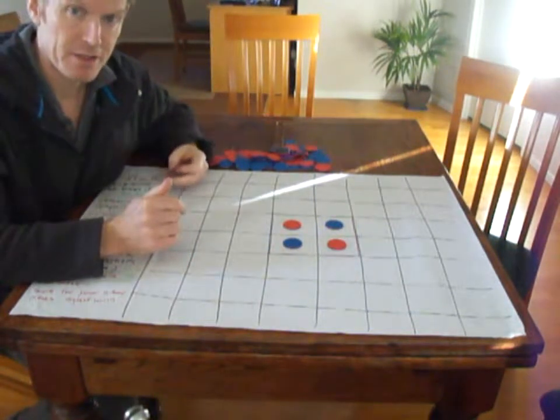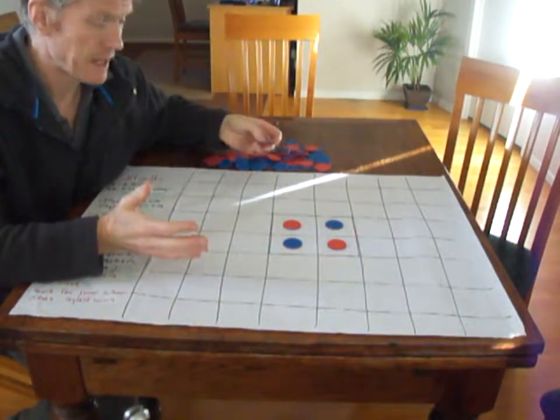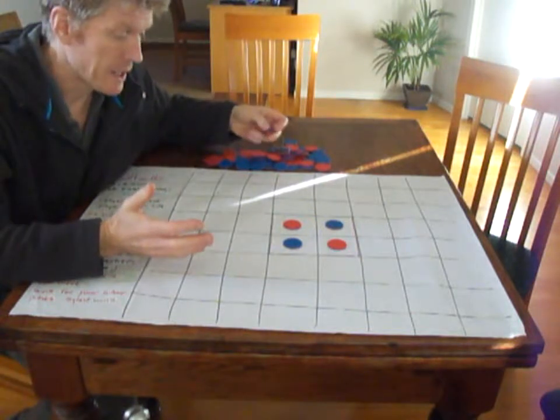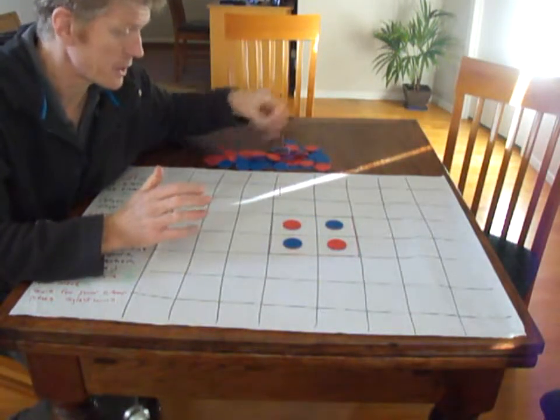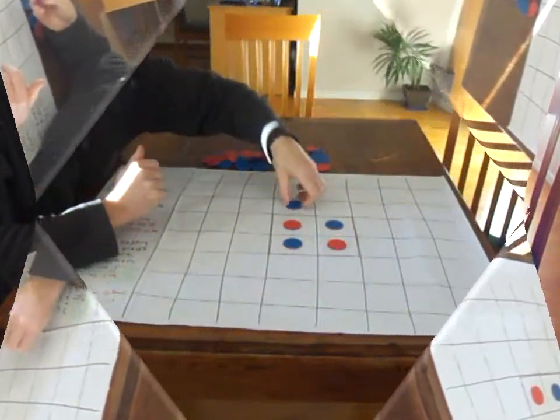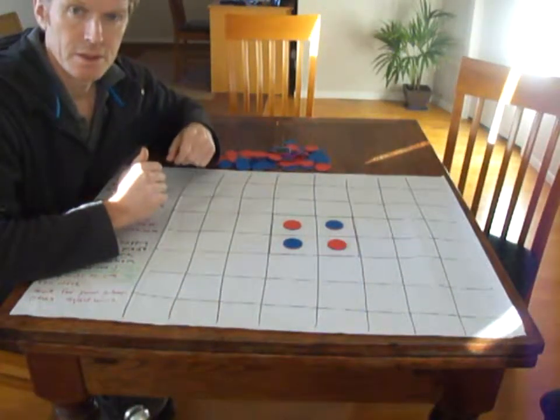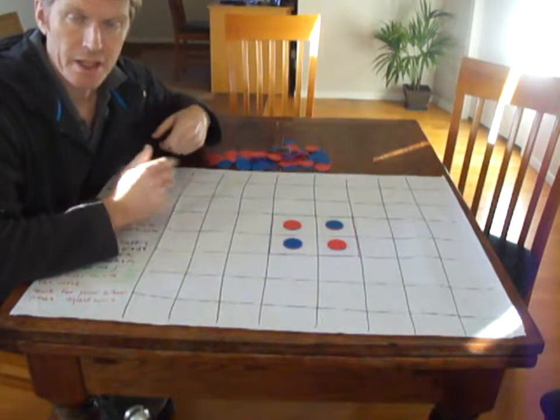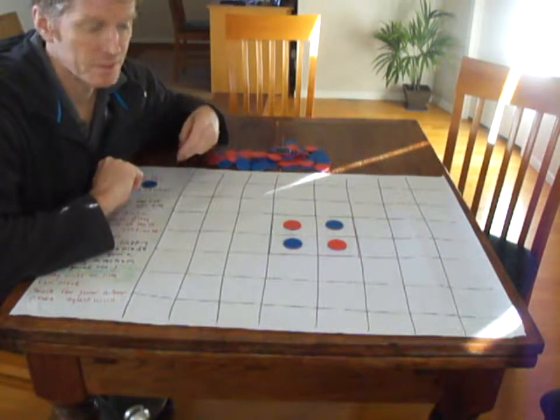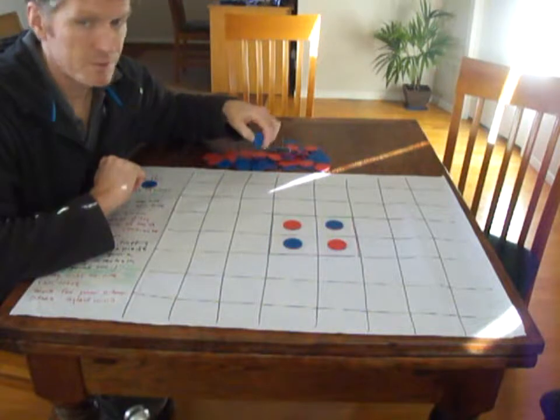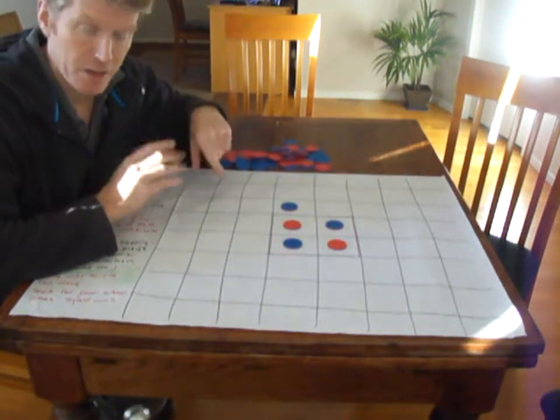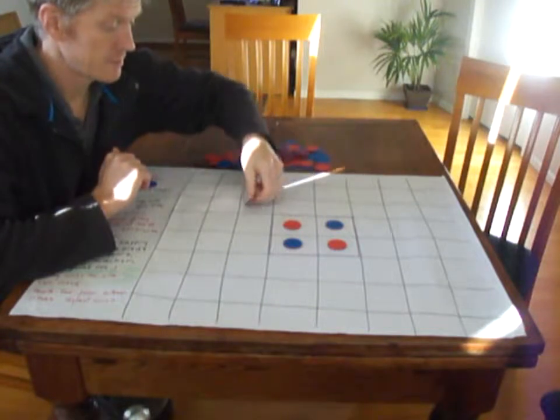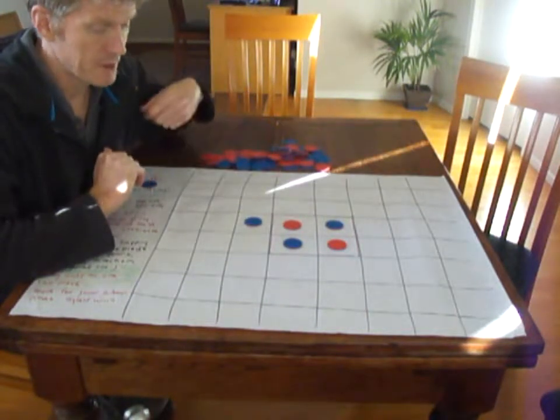This is the way the game starts and then it's a turn-based game with two players, each player picking a color, either playing blue or red. Each player in turn places a counter onto the board. Blue's first turn, they can place their counter in any unoccupied square, any of these spots.